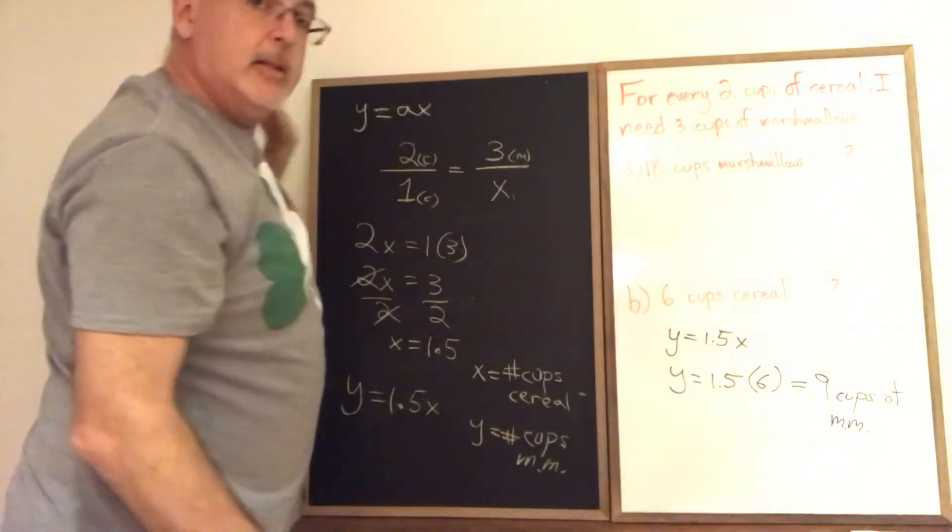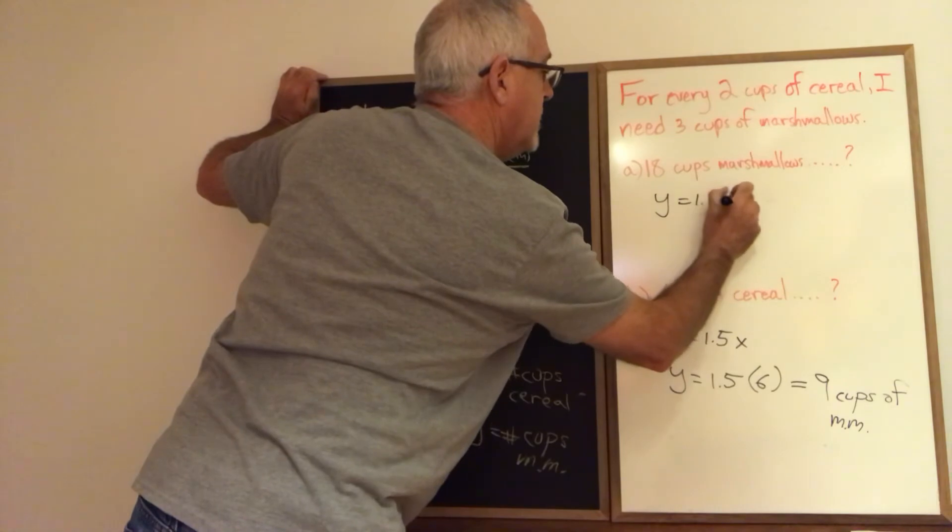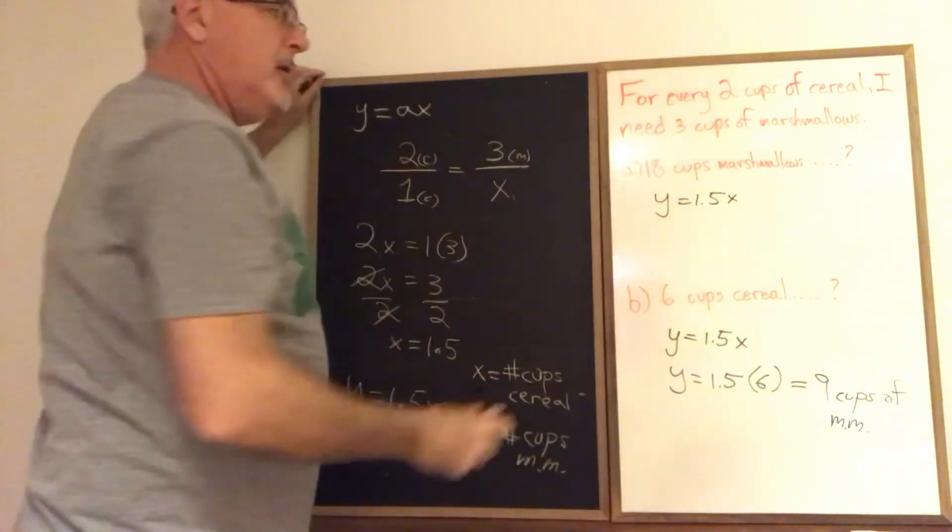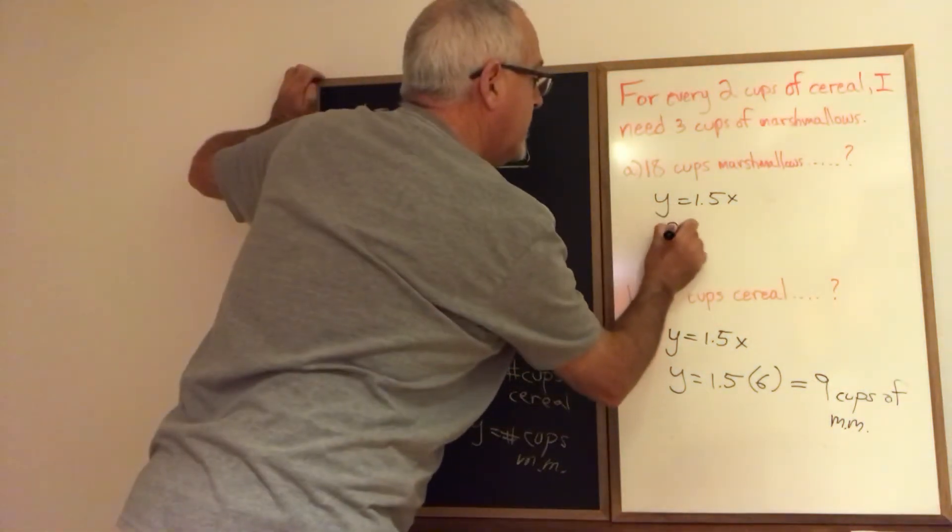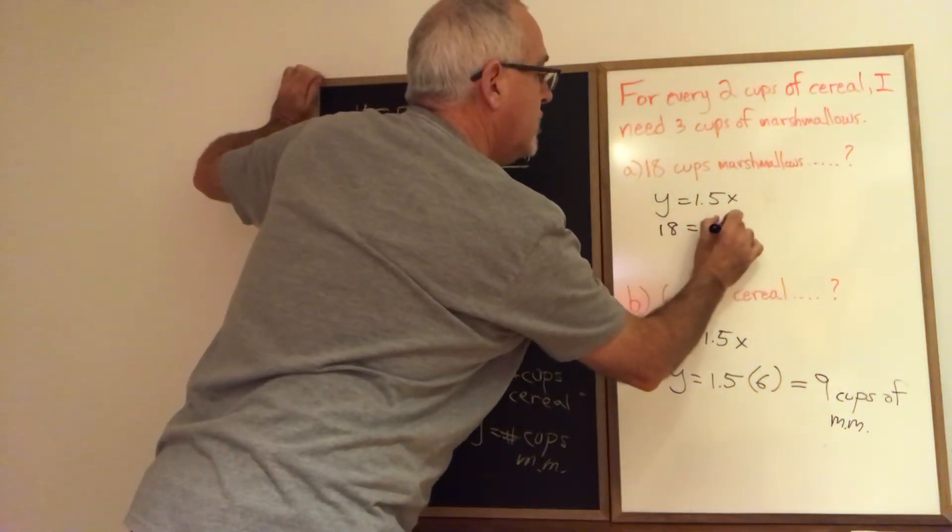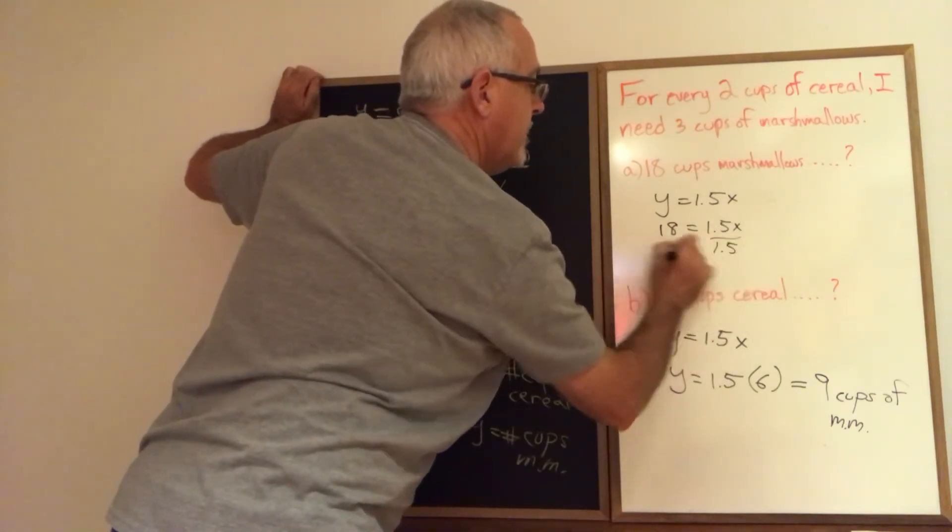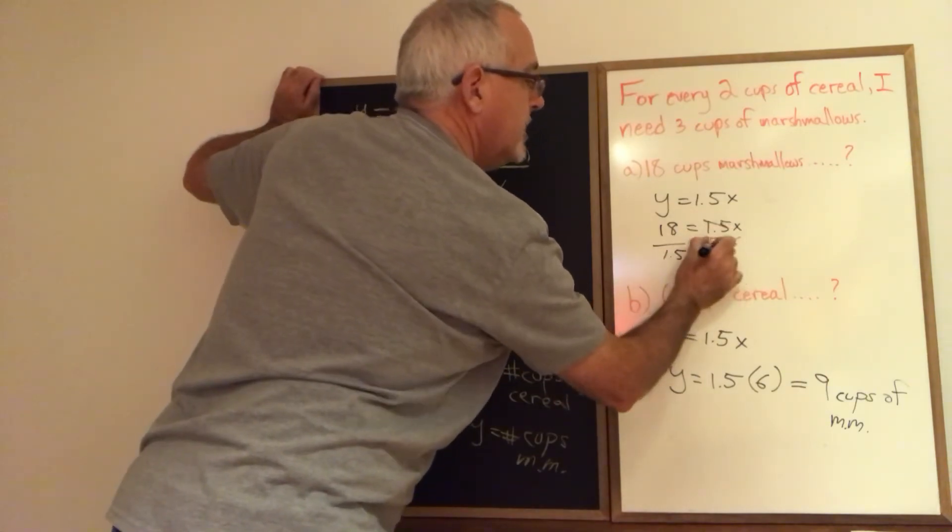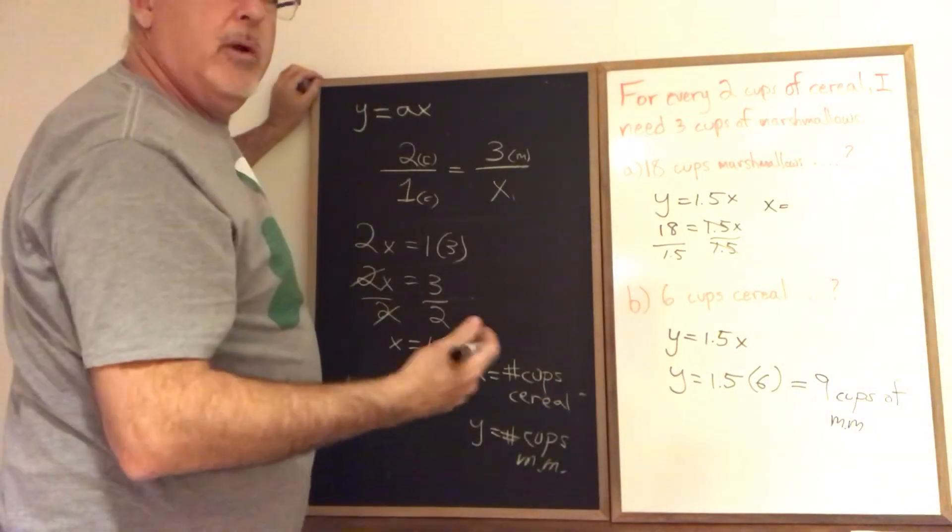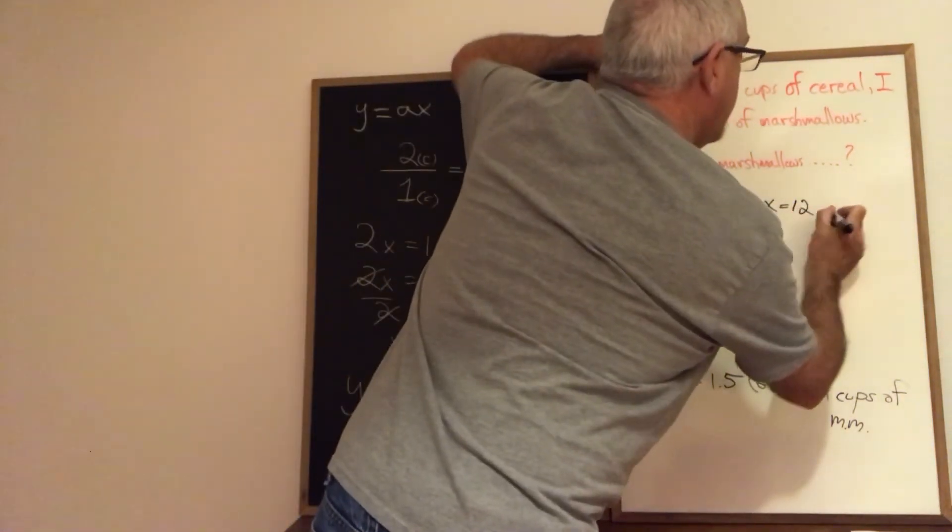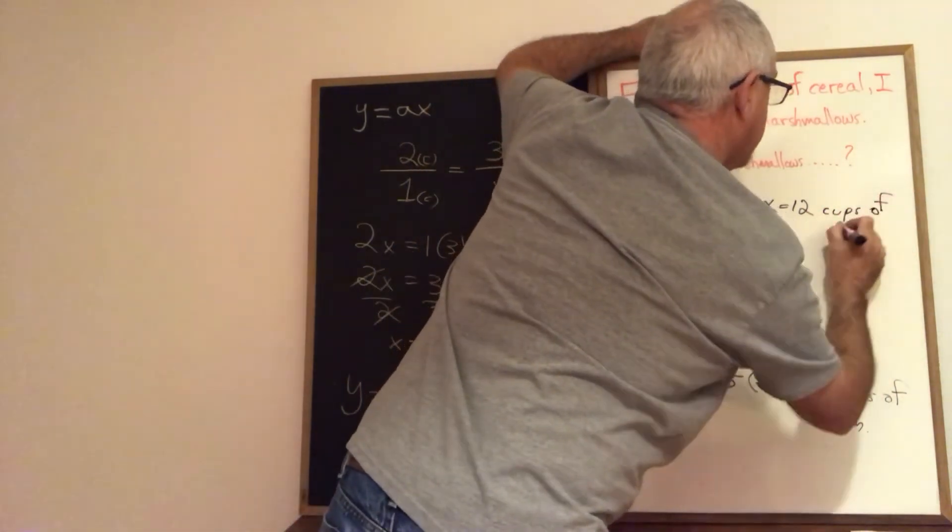To answer question A is similar, I start with my model Y equals 1.5X. But the 18 cups of marshmallows is not an X. That's a Y. So I'm replacing the Y with 18 and I have 18 equals 1.5X. And what I have to do is divide both sides by 1.5 to isolate my variable. These cancel. X is isolated and is equal to 18 divided by 1.5, which is 12. And the unit of measure is cups of cereal.